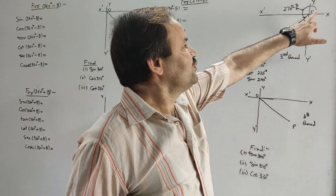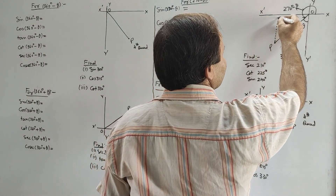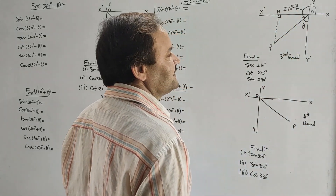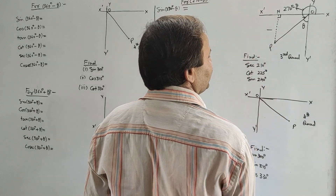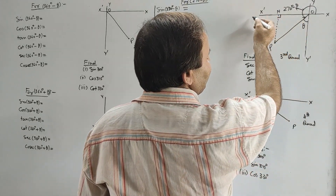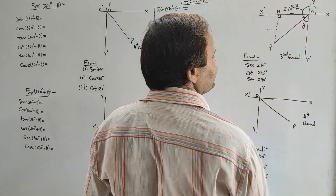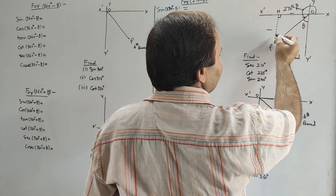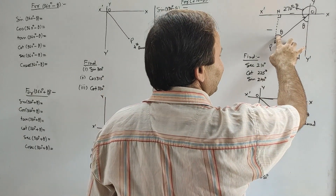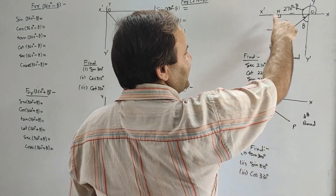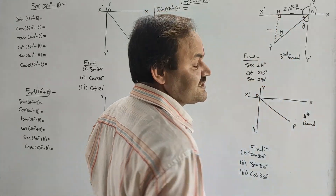For 270° minus θ, the perpendicular is drawn from point P on the reference line, that is on the x-axis, with foot of the normal at N. The perpendicular PN lies along the negative y-axis, so it is negative, while the base ON lies along the negative x-axis, so it is also negative. If angle POy' is θ, then in triangle OPN, angle OPN will also be θ, being an alternate angle. So for angle θ, perpendicular is ON and base is PN, whereas for 270° minus θ, PN was perpendicular and ON was base.